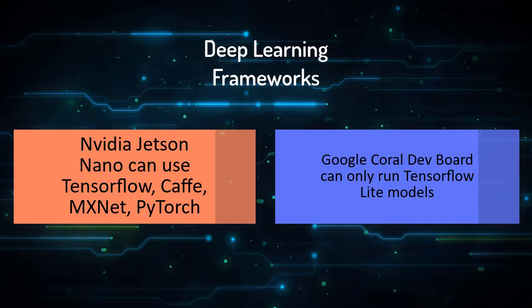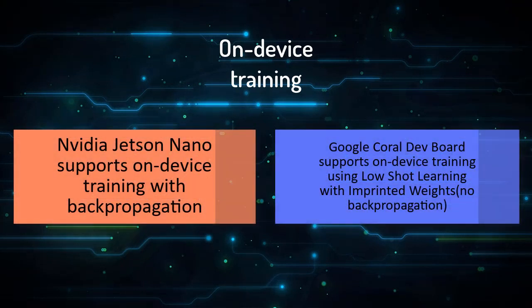Supported frameworks on Jetson Nano include TensorFlow, PyTorch, Keras, and MXNet. Both boards support on-device training. For NVIDIA Jetson Nano, this is regular training with backpropagation — it's a bit slow, but it's the same regular training pipeline as you would do on a desktop computer with a GPU. Google Coral Dev Board supports on-device training without backpropagation using a clever technique called low-shot learning, which uses a pre-trained feature extractor to embed object features into the last layer of the neural network.